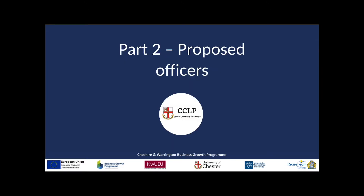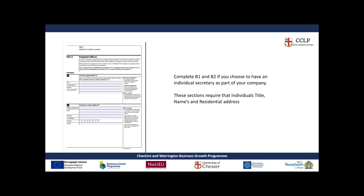Now that you've completed part one, it is time to move on to part two, which concerns the proposed officers of the company. It's important to note that not all parts of part two need to be filled out. As a private limited company, it is not mandatory to have an individual or corporate secretary. However, if you do choose to have an individual secretary, you will fill out that person's details in B1 and B2. If not, you can leave this section blank.